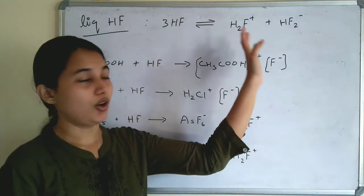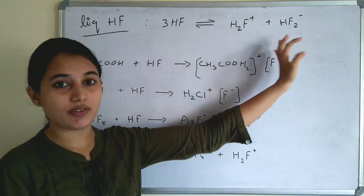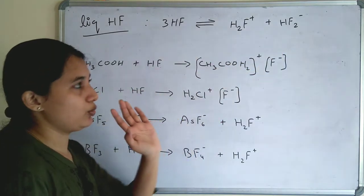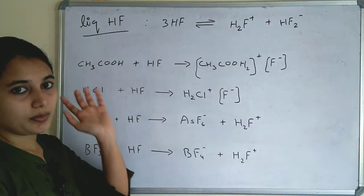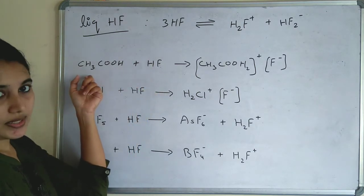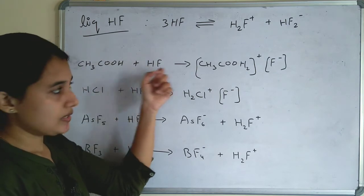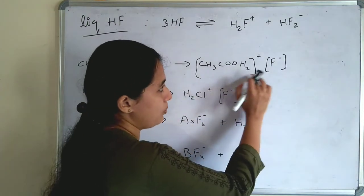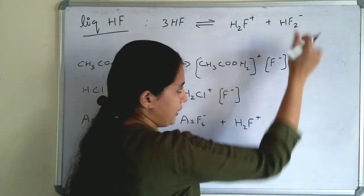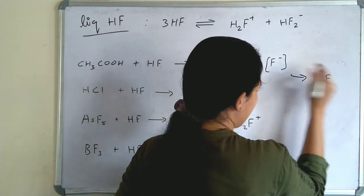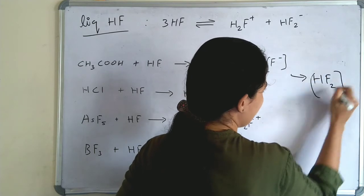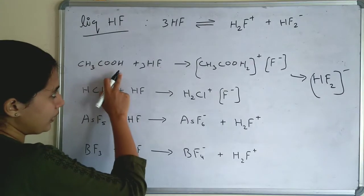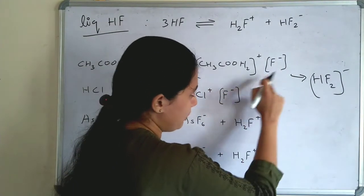3HF is auto-ionized to H2F⁺ and HF2⁻. H2F⁺ is the positive ion and HF2⁻ is the negative ion. In liquid HF: acetic acid CH3COOH + 3HF → CH3COOH2⁺ + HF2⁻. The F⁻ from the reaction forms HF2⁻.